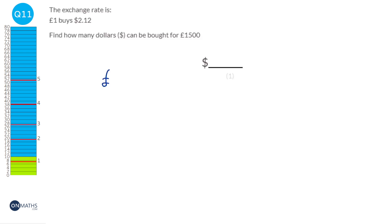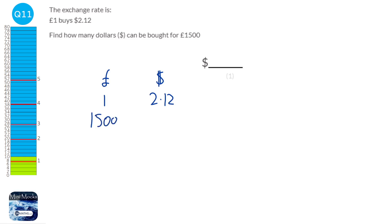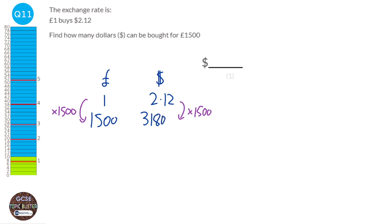In this question we've got pounds and dollars, and we're told that 1 pound is equivalent to $2.12. We're asked how many dollars can be bought for 1,500 pounds. To get from 1 to 1,500 we times by 1,500, and we do the same to the other side. When we do that we get the answer of 3,180. So 1,500 pounds is equivalent to 3,180 dollars.